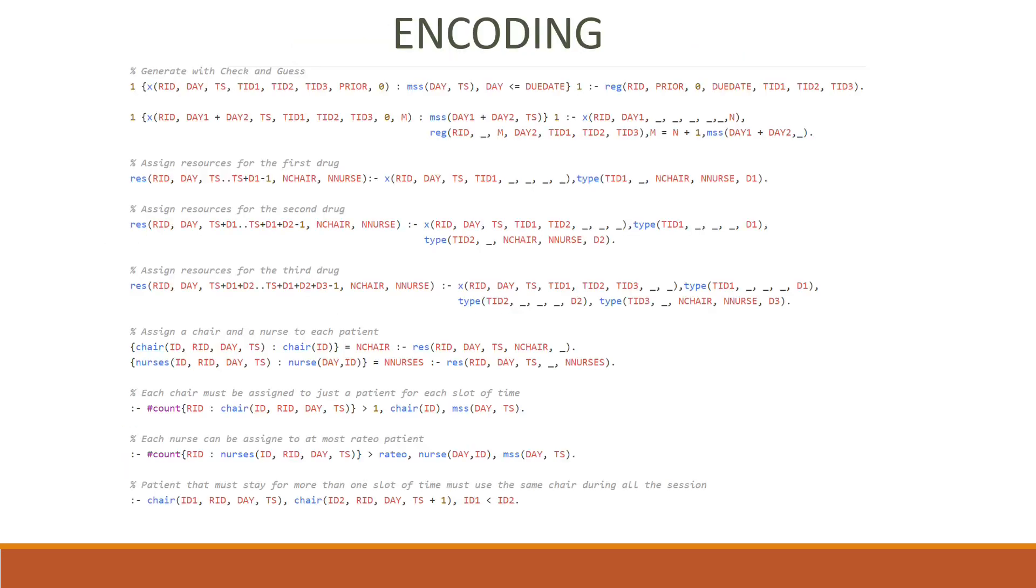So here we have the first half of our encoding, and in the first row we generate the assignment using the guess and check methodology. The program tries to give an appointment to each patient and then check if it satisfies the other constraints. The other rules take care of the required resources for each patient, and for example in the last constraint it checks that every patient uses the same chair if he has to stay for more than one slot of time.